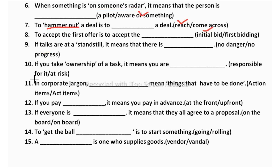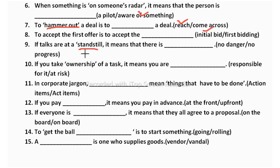The ninth one: if talks are at a standstill, it means there is blank — no danger or no progress? Standstill means without any movement. If there is no movement, there is no progress. So the correct answer is no progress.